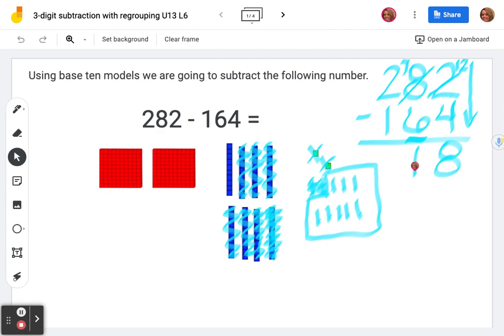Which is correct because we had eight, we busted one up which left us with seven, and now we're subtracting six, which makes it one. Then we move to our hundreds place. Two minus one. We have two hundreds, we're taking away one. We have one left. 118.